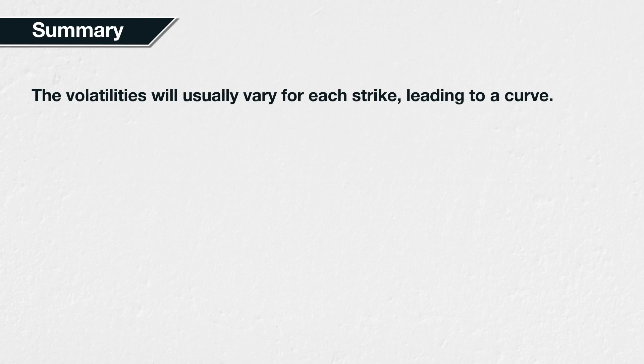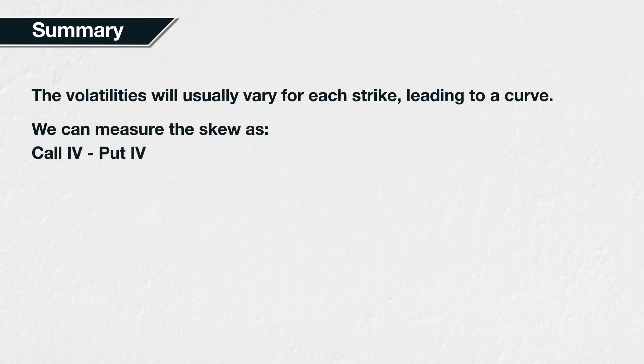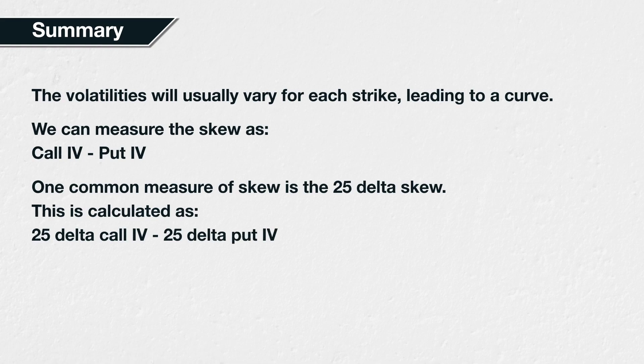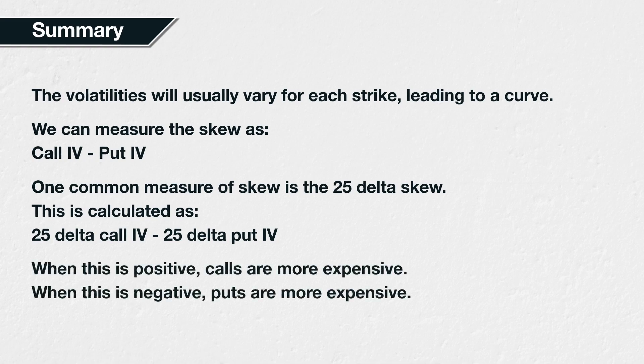In summary, the volatilities will usually vary for each strike, even within the same expiration date. When plotted on a chart, they will create a curve which is often skewed to one side. It is possible to measure this skew by subtracting the implied volatility of a put from the implied volatility of a call. These options will usually have the same delta, except the put delta will be negative, of course. One very common measure of skew, for example, is to look at the 25-delta skew, which consists of a 25-delta call and a 25-delta put — or deltas of 0.25 and negative 0.25 respectively. This would be calculated as the 25-delta call implied volatility minus the 25-delta put implied volatility. When this is positive, calls can be said to be more expensive than puts. When this is negative, puts can be said to be more expensive than calls.